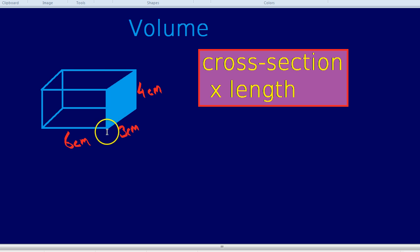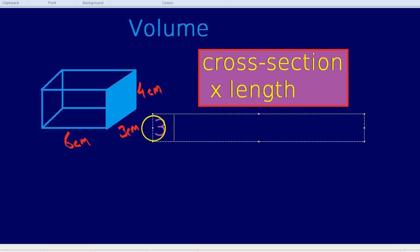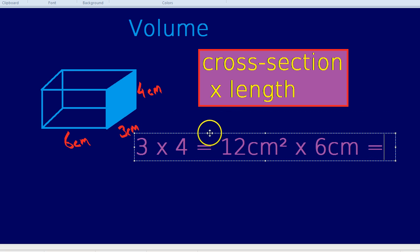And let's use that for this shape. The area of that cross-section would be 3 times 4. 3 times 4 is 12, so that's 12 centimeters squared, because it's an area. Then, we times 12 centimeters squared by the length, which is 6 centimeters.